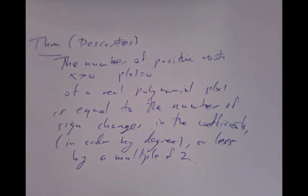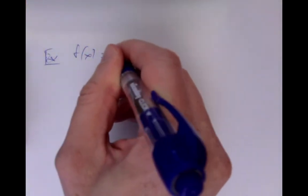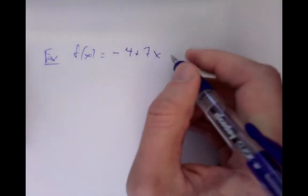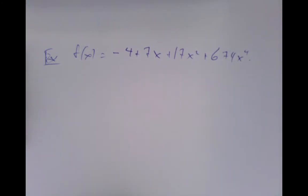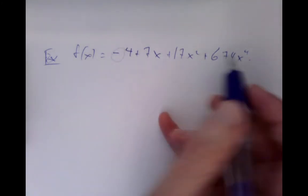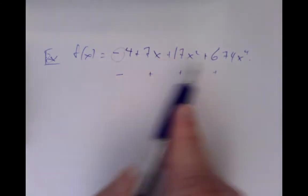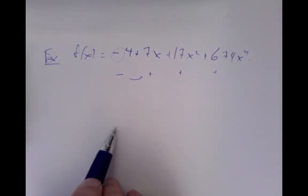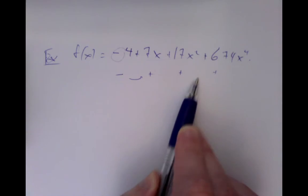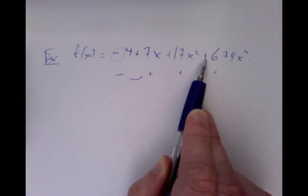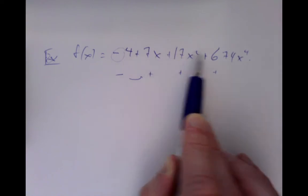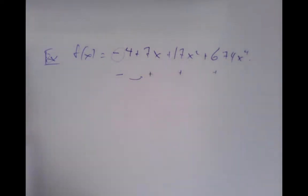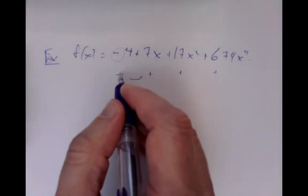Let's see what it looks like in our example: f of x equals minus 4 plus 7x plus 17x squared plus 674x to the fourth. We look at the signs of the coefficients: negative, positive, positive, positive. There's a sign change from minus to plus, and then the signs don't change again. We ignore any terms that don't appear — we only look at the terms that actually show up, written in order of powers of x.